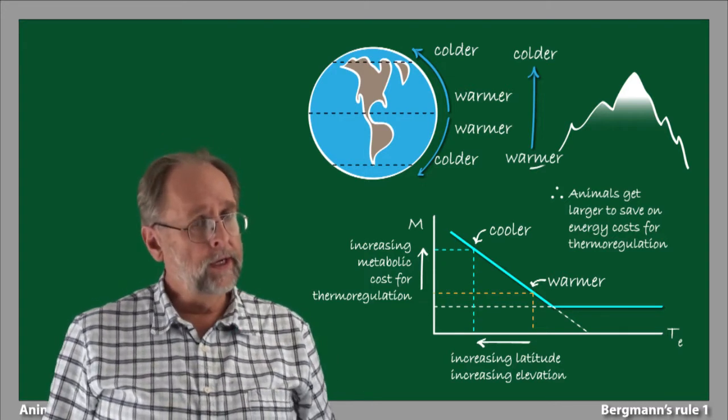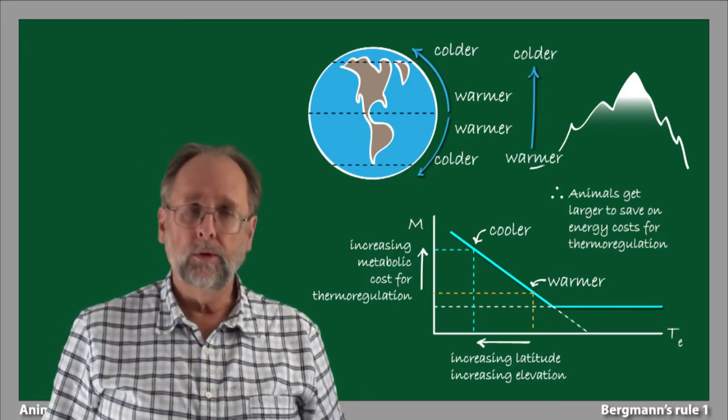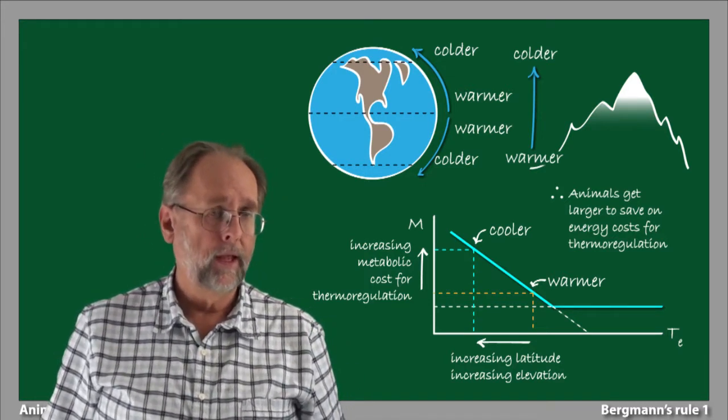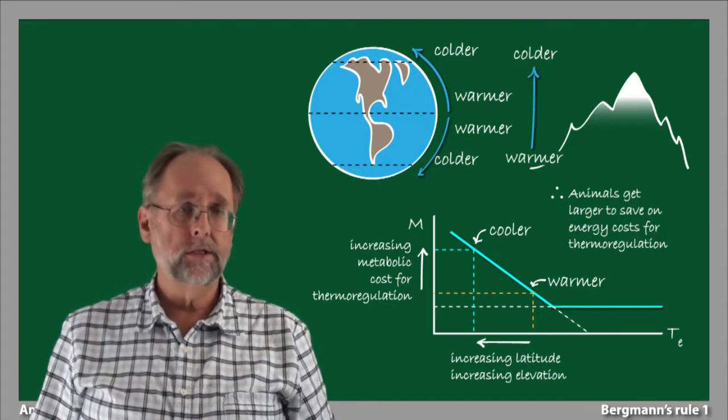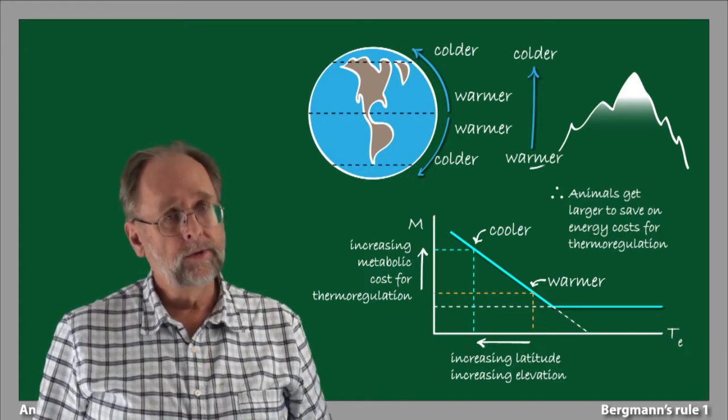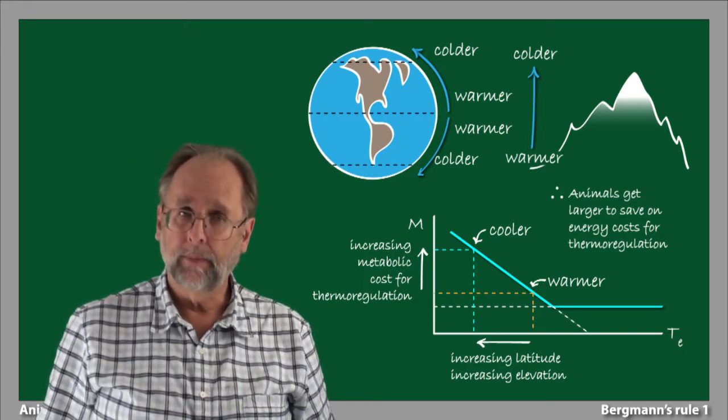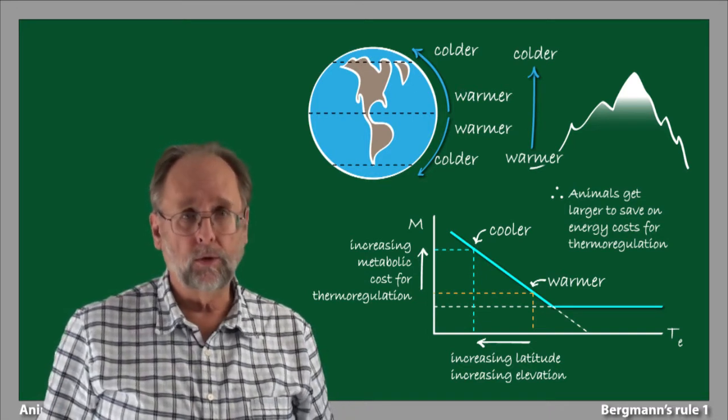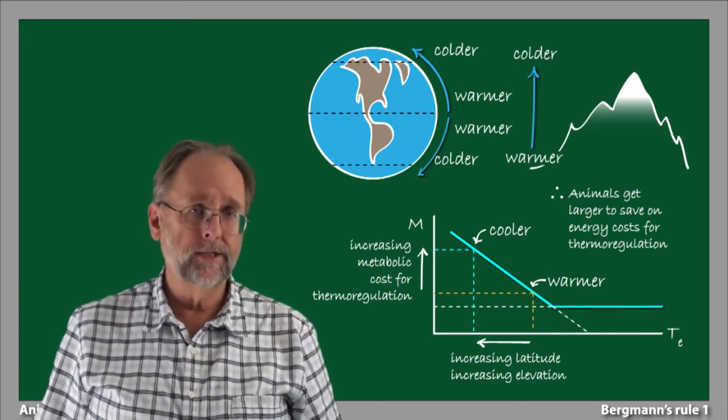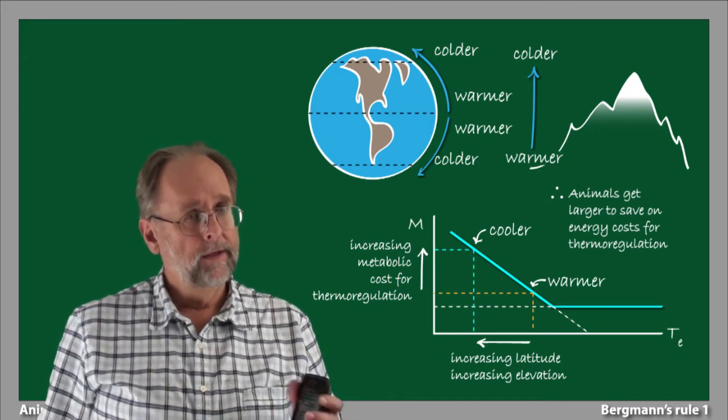Similarly, the less energy you devote to thermoregulation, the more energy you can devote to reproduction. In colder climates, animals that can reduce their metabolic costs for thermoregulation will outcompete animals that cannot. Therefore, we would expect natural selection to drive animals in colder climates to ever larger body sizes.